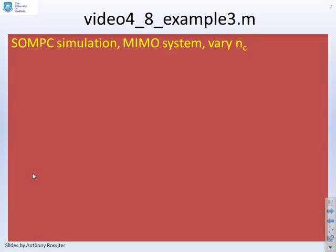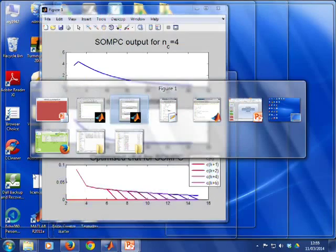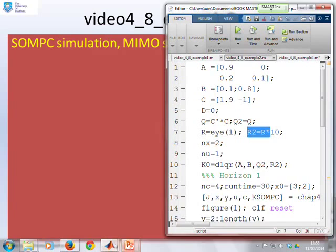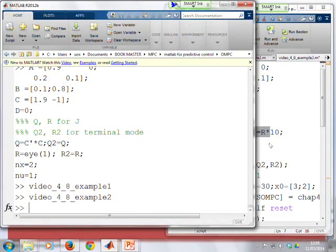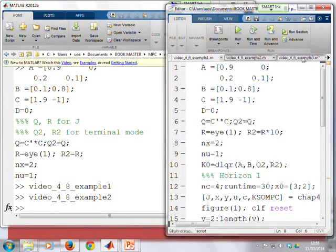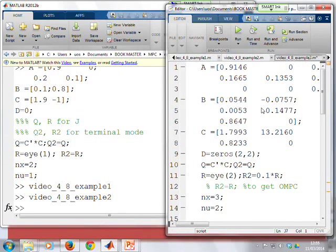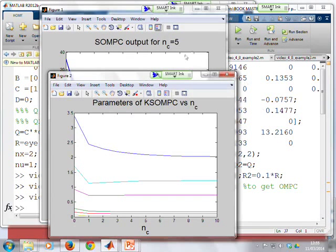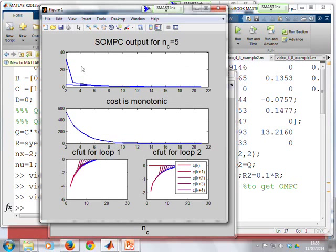What about example three then? The difference with example three is that this is a multivariable system. But otherwise, we're going to have similar patterns. So let's run this one. In example three, you can see the outputs converge. As expected, it's stabilising. If you look at the cost function, you see it's convergent and it's monotonic. So it's a Lyapunov function as expected.